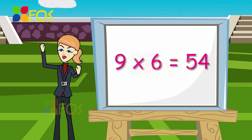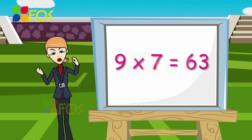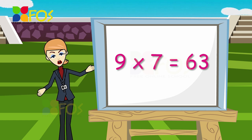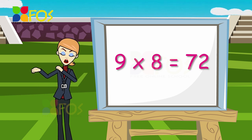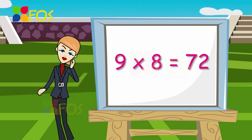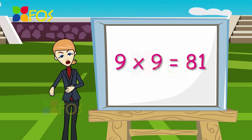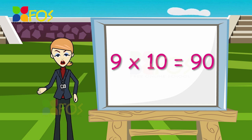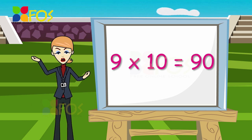Nine sixes are fifty-four. Nine sevens are sixty-three. Nine eights are seventy-two. Nine nines are eighty-one. Nine tens are ninety.